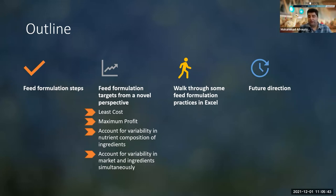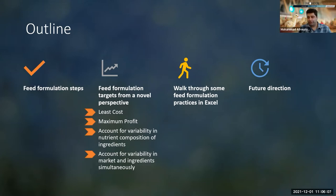As an outline, we are going to talk about feed formulation steps. I'll talk about different targets: least cost feed formulation, maximum profit, stochastic feed formulation which accounts for variability in nutrient composition of feed ingredients, and multiple objective programming which accounts for variability in market and ingredient composition. I'll also walk you through some feed formulation practice in Excel and discuss future directions for feed formulation optimization.